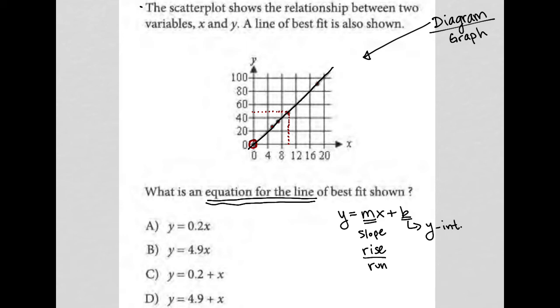So, the easiest thing to find here is the y-intercept because we know that it goes through the origin. It touches the y-axis at 0. So, then my equation should really be y equals mx. There is no b.